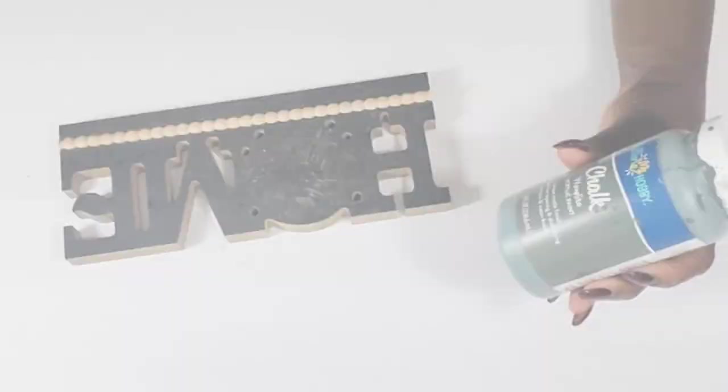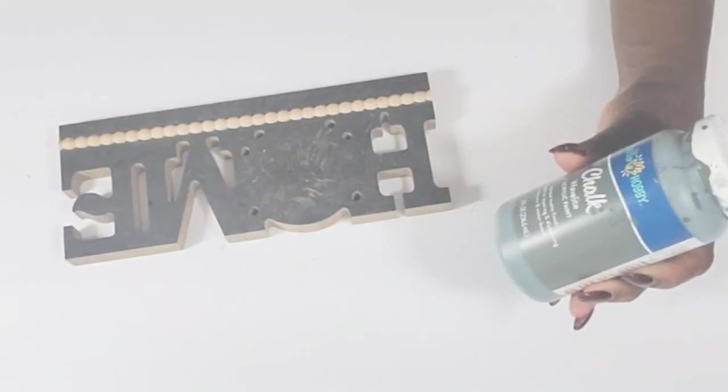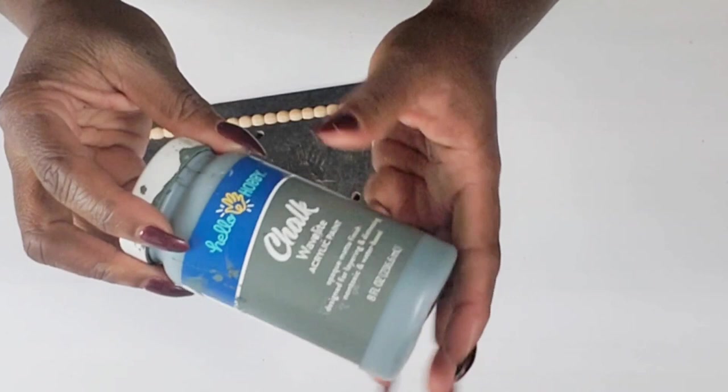I'm going to use this wave light color chalk paint. It's a really pretty green color and I'm going to use this to paint this entire piece except the wood beads.